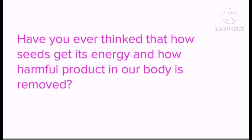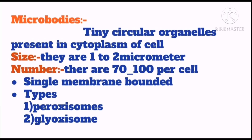Now here the question arises: how do seeds get their energy, and how does our body detoxify harmful substances such as alcohol and ammonia? You will be able to answer these questions yourself after watching this video. Microbodies are small circular organelles present in the cytoplasm of the cell.